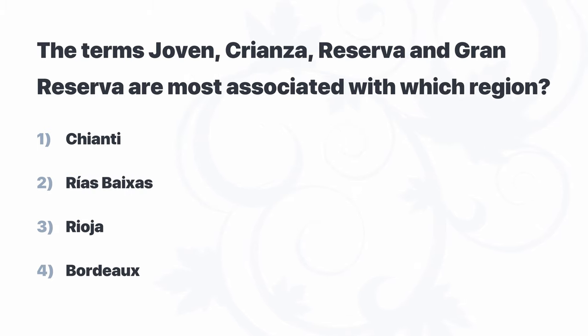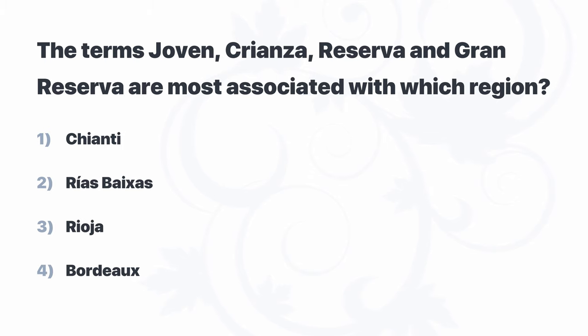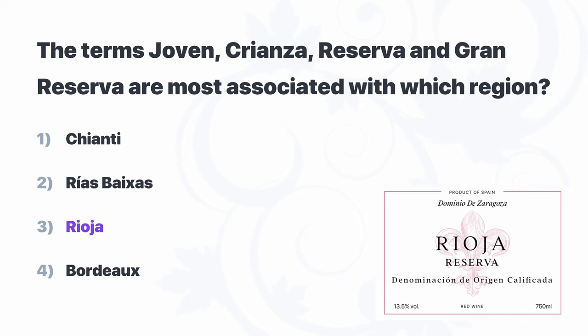The terms Joven, Crianza, Reserva, and Gran Reserva are most associated with which region? Chianti, Rías Baixas, Rioja, or Bordeaux? Right away, let's cross off Chianti and Bordeaux because these are Spanish terms. These four terms are indicators of age. Rías Baixas is known for its fresh styles of Albariño, while Rioja is known for its red wines aged under these classifications. So our answer is Rioja.